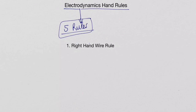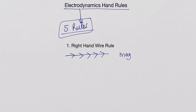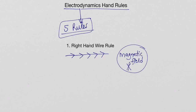The first rule we're going to look at is the right hand wire rule. We use this if you have a wire — I'm just going to draw a straight line representing a wire — and you've got a current flowing through the wire. So let's say we've got a current flowing that way. Then we know that we have a magnetic field, and we use this right hand wire rule to determine the direction of this magnetic field around the wire.